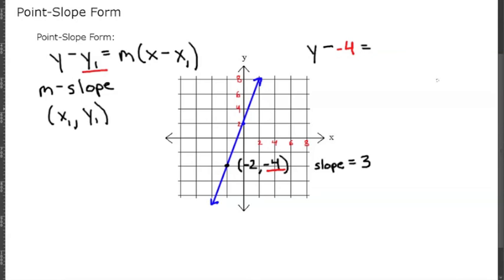And that's going to be equal to our m, which is our slope, times x minus our x1, which in this case is negative 2.